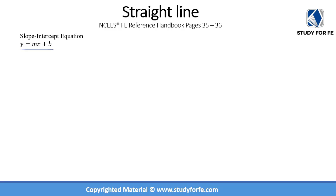Let us dissect this equation a little bit. y obviously represents the y-component of the straight line, and x represents the x-component. m is the slope, and b is the y-intercept — that is, the value that y will have on the y-axis when x is equal to 0.